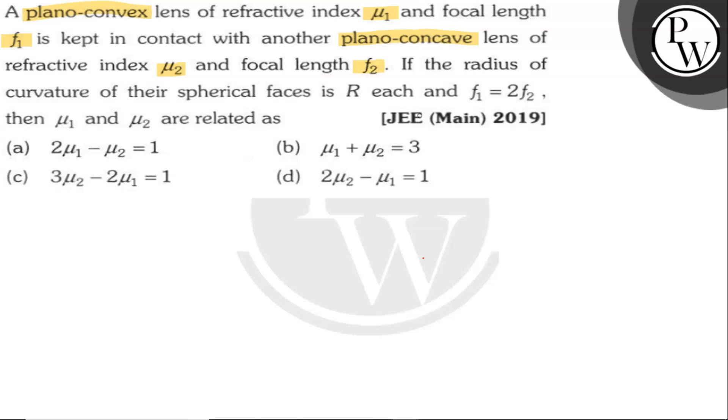If the radius of curvature of the spherical faces is R each, and f₁ equals twice f₂, then μ₁ and μ₂ are related as: We have two plano-convex lenses with the same radius of curvature R, and given that f₁ equals twice of f₂, we need to find the relation between μ₁ and μ₂.